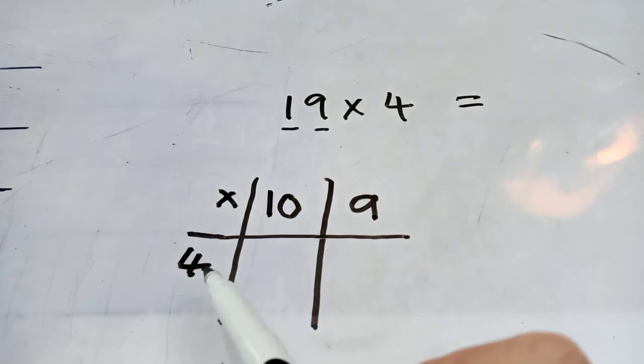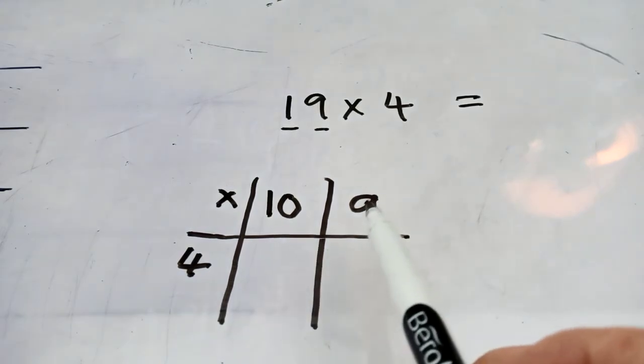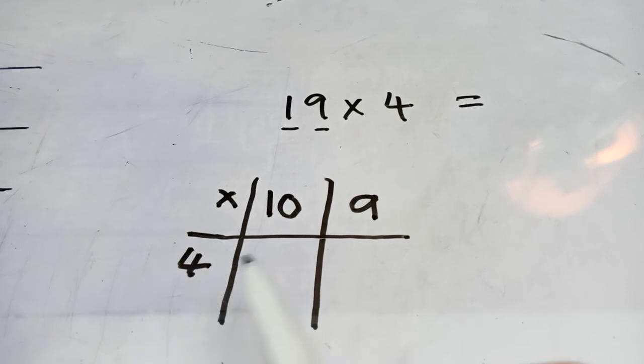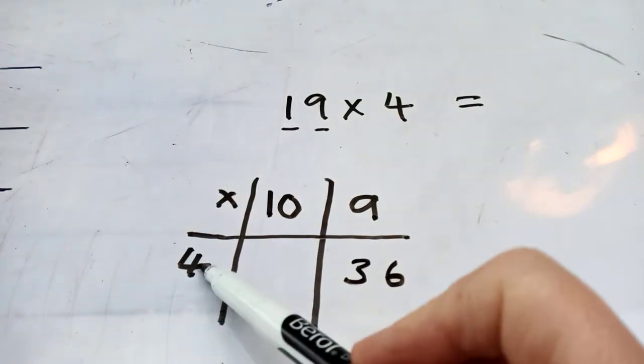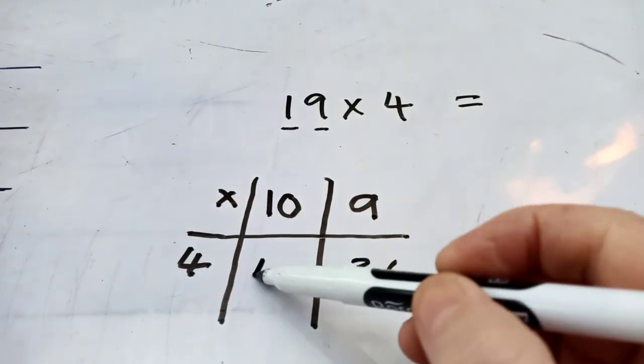Right, ready now. So, 4 times 9, or 9 times 4. Well, isn't that near 40? Isn't that like 10 times 10? I know, it's 36. And what's 4 times 10? Well done, it's 40.